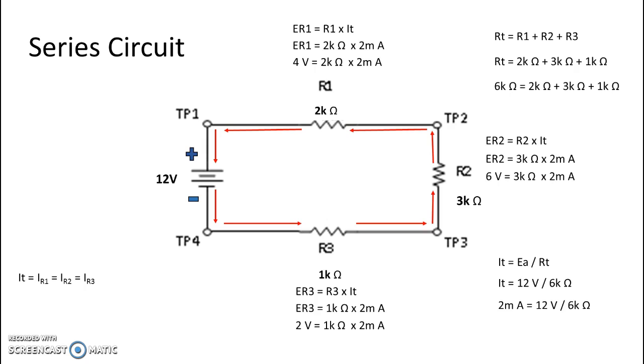This circuit also has 4 test points: test point 1, test point 2, test point 3, and test point 4. We use test points in a circuit to make voltage measurements. Many manufacturers include test points in their equipment with notations of proper operating voltages to make troubleshooting easier.